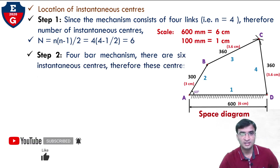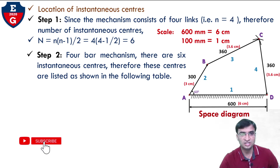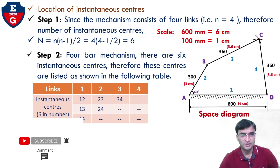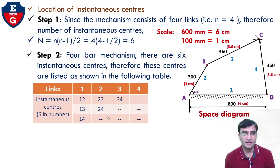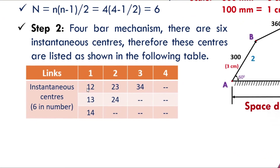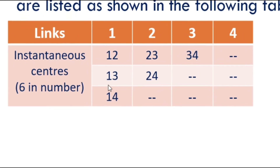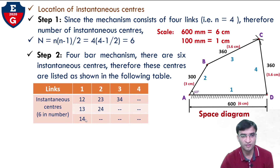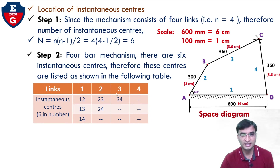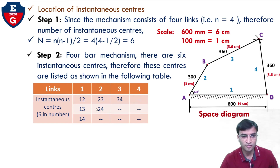Step 2: For a four-bar mechanism there are 6 instantaneous centers. These centers are listed as shown in the table. I will share an easy trick so you can understand very easily. Link number 1 gives combinations: I12, I13, and I14. Then for link 2: I12 is already listed; I22 is not valid; I23 and I24 are possible. For link 3: I31 and I32 are already listed; I33 is not valid; I34 is new. So counting: 1, 2, 3, 4, 5, and 6. We have to locate all 6 centers on the 4-bar chain mechanism.